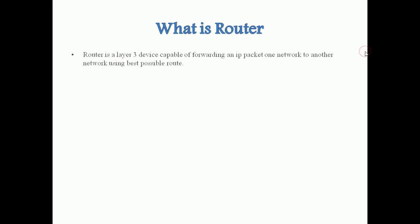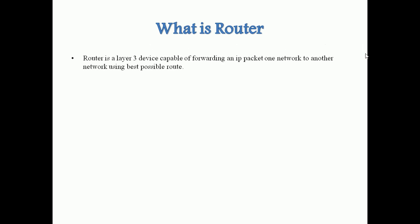You can define a router as: a router is a Layer 3 device capable of forwarding an IP packet from one network to another network using the best possible route. There are multiple points in this sentence. Router is a Layer 3 device, meaning it is a network layer device. It forwards IP packets from one network to another network — not from host to host.